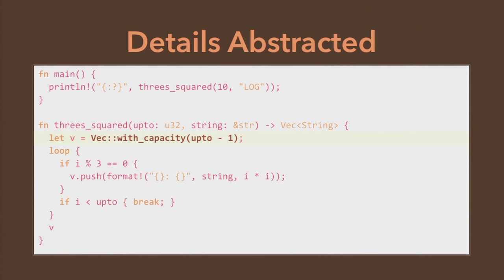A really good example of zero-cost abstractions is bounds checks. In a safe language you don't want to segfault because you index into an array outside its bounds — that's probably half of all security vulnerabilities. Whenever you index into a vector in Rust, it inserts an automatic bounds check. But if you iterate over an array and do a bounds check each time, those add up. If you use map, filter, or collect, the internals can know they don't have to keep doing the bounds check because they know they're just iterating — so they do one or zero bounds checks and just proceed.